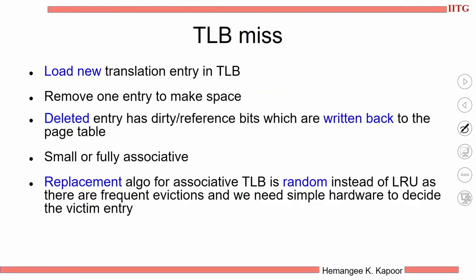Once you access a new page which is not in the TLB, bring that entry and populate the TLB with that translation. On a TLB miss, you must load the new entry into the TLB. Since it is mostly full, you need to remove a victim. When you remove a victim, check its dirty bit — if that translation indicates the entry is dirty, meaning the physical page it points to has been modified, we need to write that page back to the disk, update the page table, and update the swap space. The TLB is small for faster searches and is mostly fully associative, using random replacement policy rather than LRU so that search and replacement is done quickly.